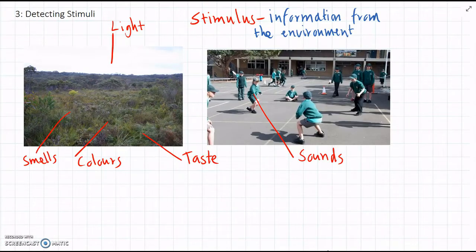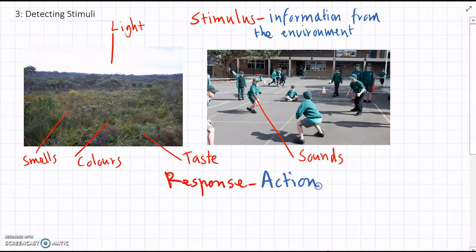Once an organism detects a stimulus from its environment, then it will often cause a response. So a response is something that the organism does, depending on the stimulus. So responses, they're an action taken that is caused by a stimulus.